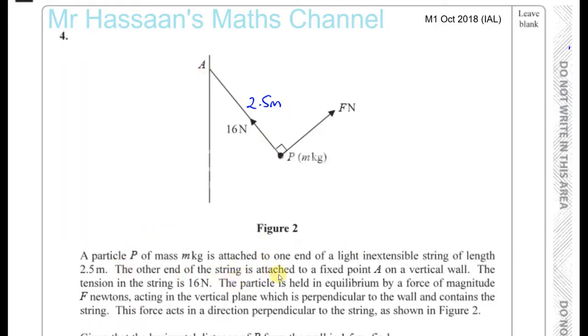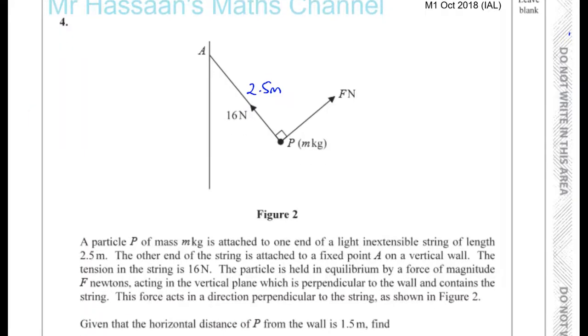The other end of the string is attached to a fixed point A on a vertical wall. The tension of the string is 16 newtons. The particle is held in equilibrium by a force of magnitude f newtons, which is over there, acting in the vertical plane which is perpendicular to the wall and contains the string. This force acts in a direction perpendicular to the string as shown. So there's a right angle between these two forces. That makes life a bit easy for us, actually.